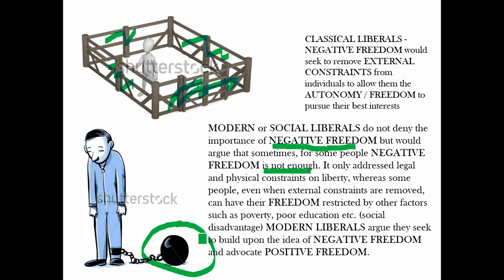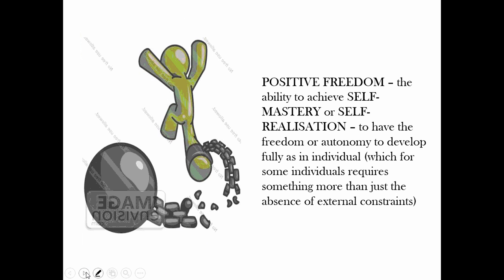Modern liberals therefore seek to build on the idea of negative freedom and advocate positive freedom. Positive freedom is the ability to achieve self-mastery or self-realisation — to have the freedom or autonomy to develop fully as an individual — which, for some individuals, requires something more than just the absence of external constraints. In effect, for modern liberals, freedom should be the absence of all constraints, not just external constraints, but also circumstances such as poverty, poor education, health, and so forth.